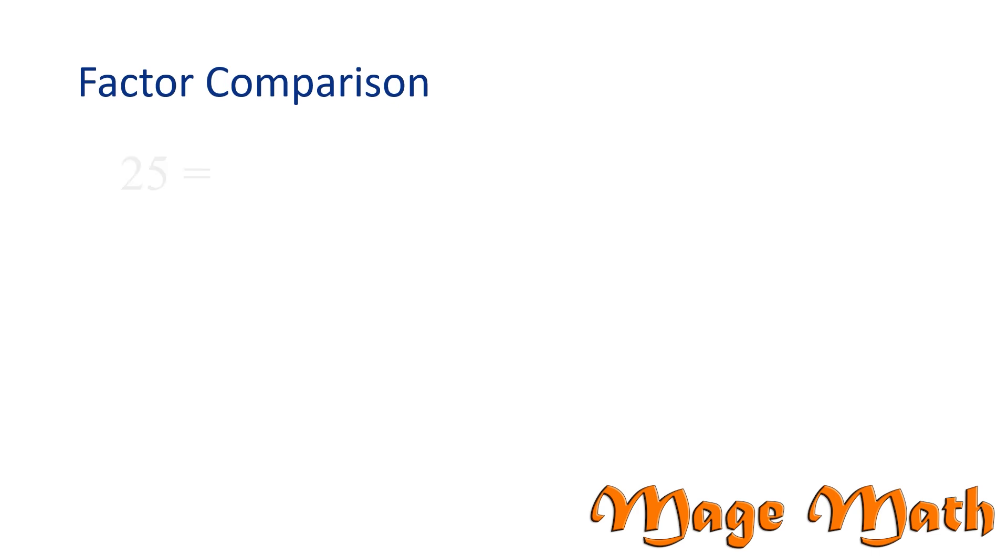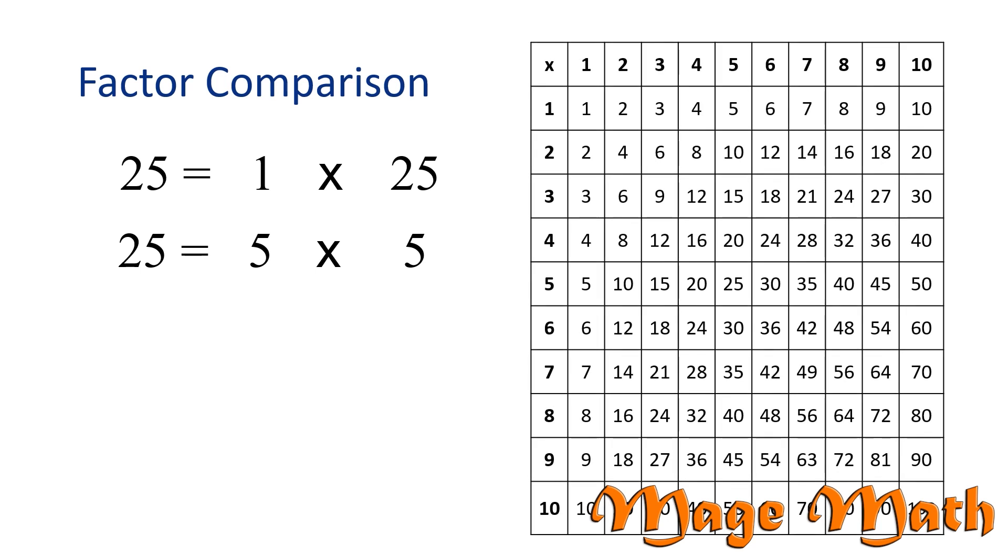One factor pair for 25 is 1 times 25. Another factor pair for 25 is 5 times what number? One way to find this number is to divide 25 by 5, which equals 5. Or, we can think back to our multiplication tables and remember that 5 times 5 is 25.